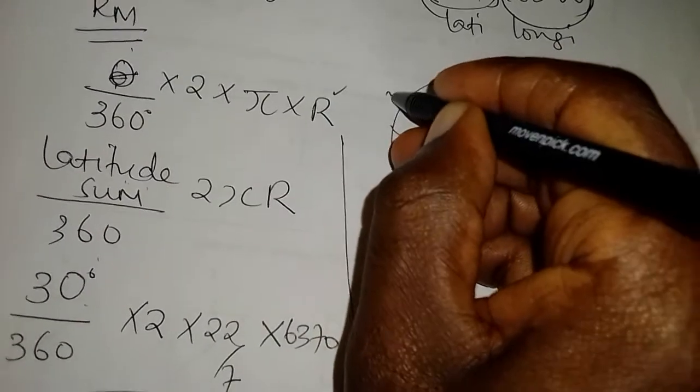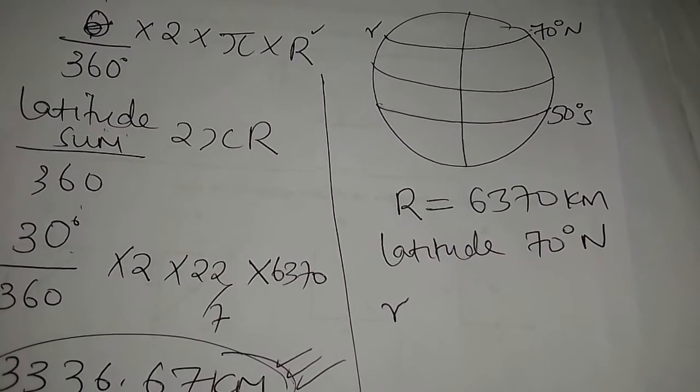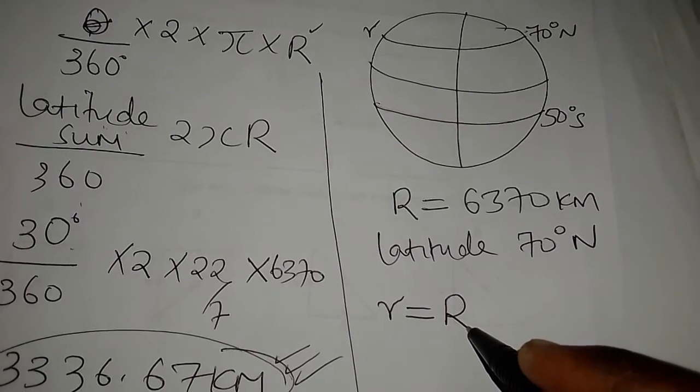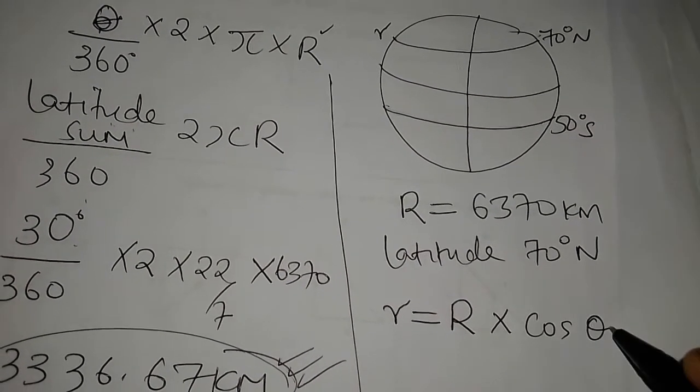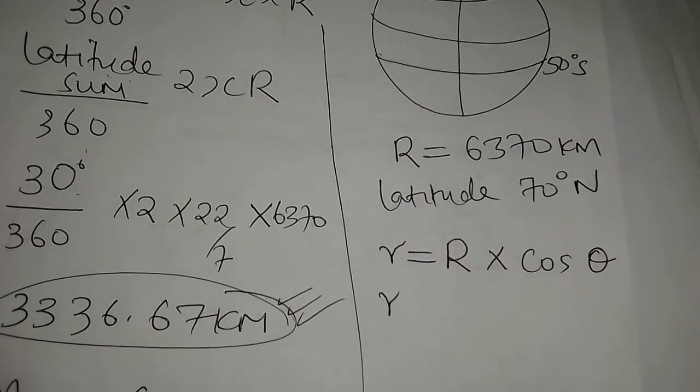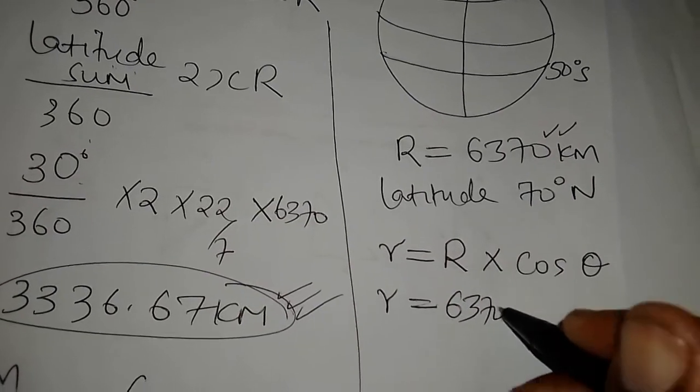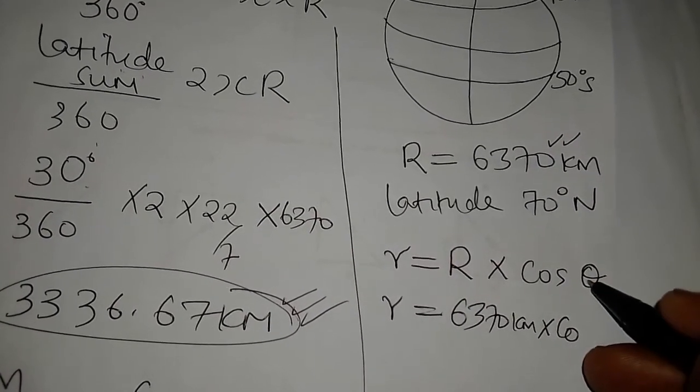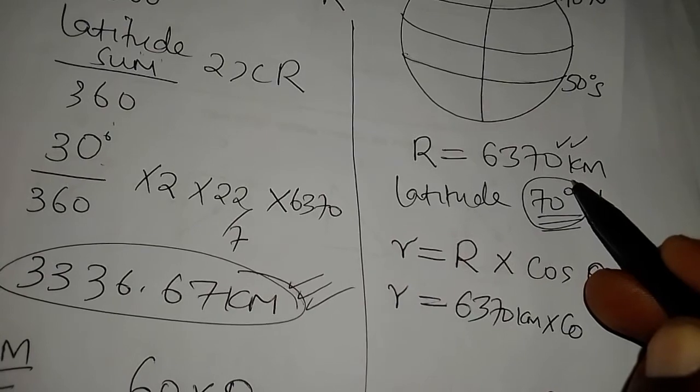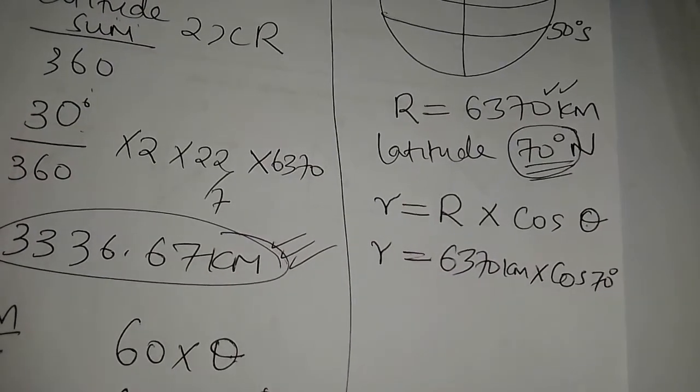They will give you the radius of the earth with capital R as 6370 kilometers. Then they will tell you the latitude is 70 degrees north. So how do I get the radius of this small circle? The formula is easier. The radius of this small circle gets represented by a small letter r. So I'll say the radius of latitude 70 with a small letter r equals the radius of the earth, capital R, times cos theta. What is the theta? 70 degrees north. This is the angle this latitude can subtend at the center. So that means times cos 70 degrees.